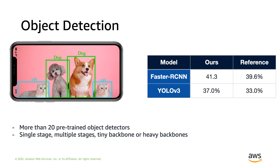Object detection is another very important task in computer vision. We apply a lot of training tricks to object detection models, so the provided models out of the box are higher in accuracy without sacrificing inference speed. We have more than 20 pre-trained object detectors in our model zoo, either single-stage or multi-stage, with tiny or heavy backbones. Compared with other reference implementations in other projects, our object detectors usually achieve higher accuracies.